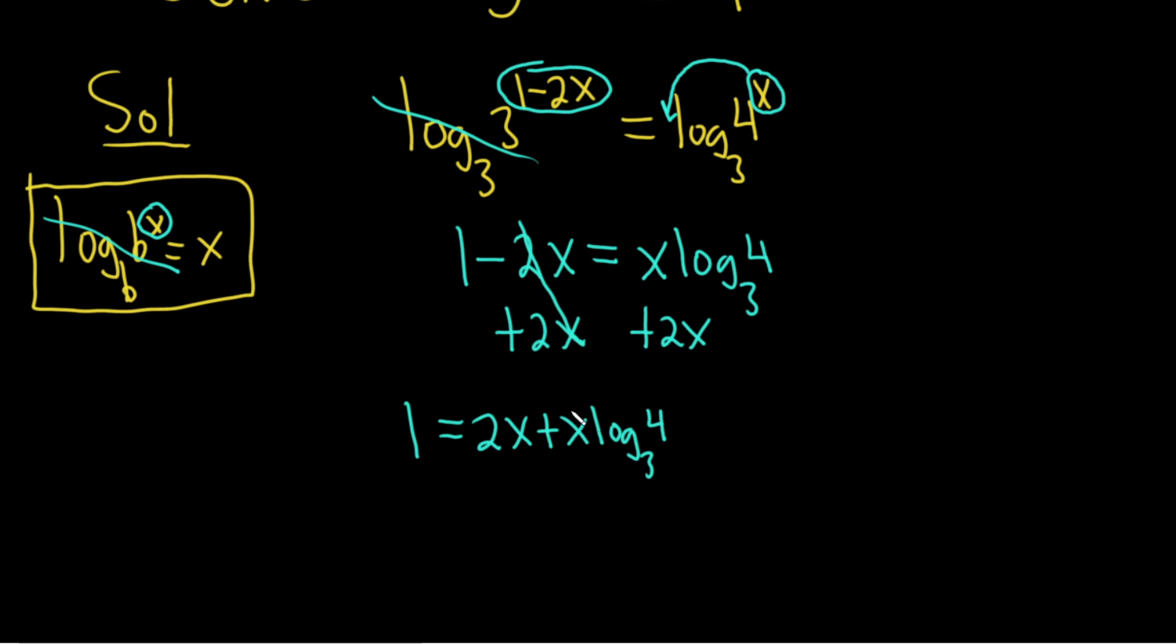And now they're all together on one side. So now what we can do is factor out an x. So this is x parentheses 2 plus log base 3 of 4.